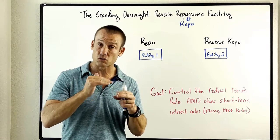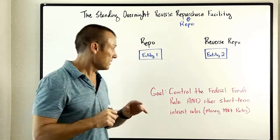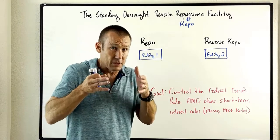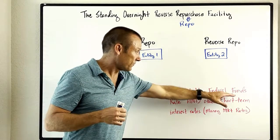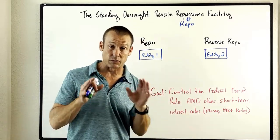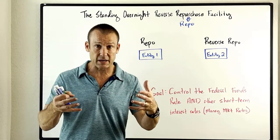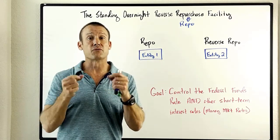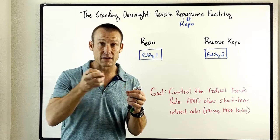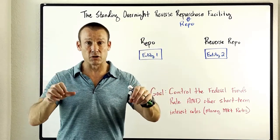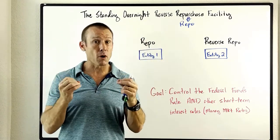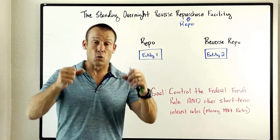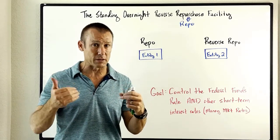The goal of the Fed is to control and influence that market-driven federal funds rate and other short-term money market interest rates. They're actually even hoping to have some impact on long-term rates too, to affect the borrowing decisions of businesses and individuals. Raise those rates to curb borrowing and dampen spending to cool the economy, or lower rates to increase borrowing and spending.